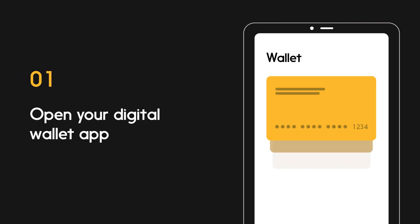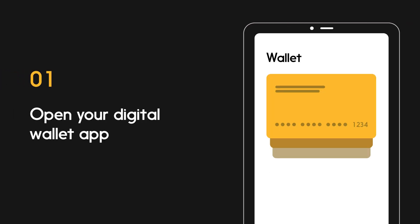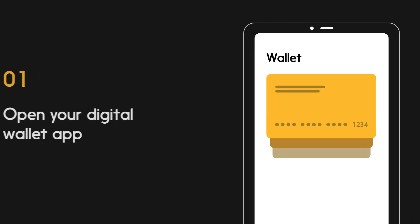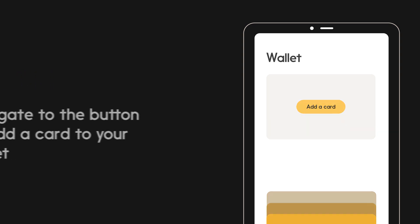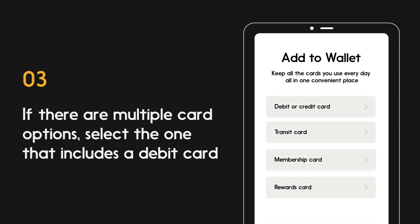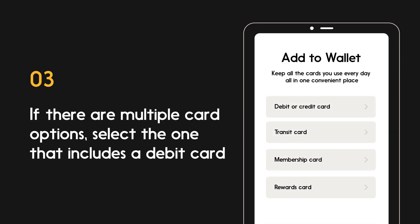First, open your digital wallet app on your device. Navigate to the button to add a card to your digital wallet. If there are multiple options for which type of card to add to your wallet, select the option that includes a debit card.